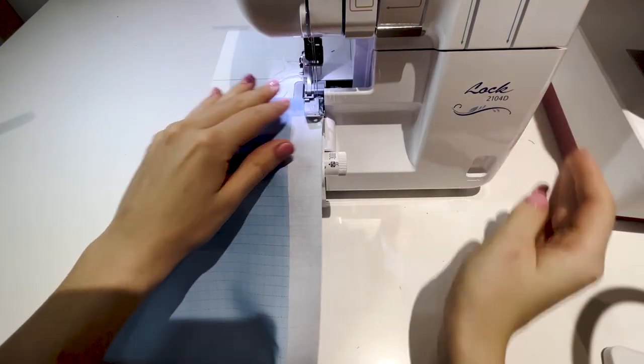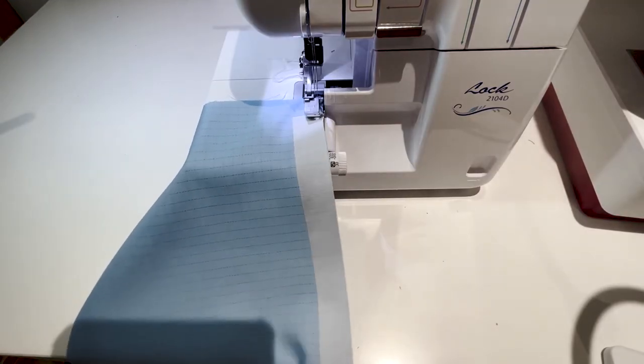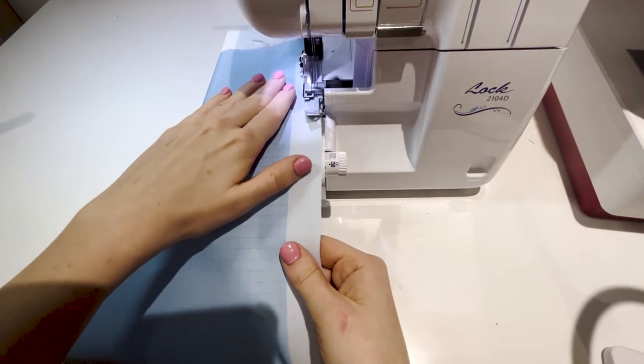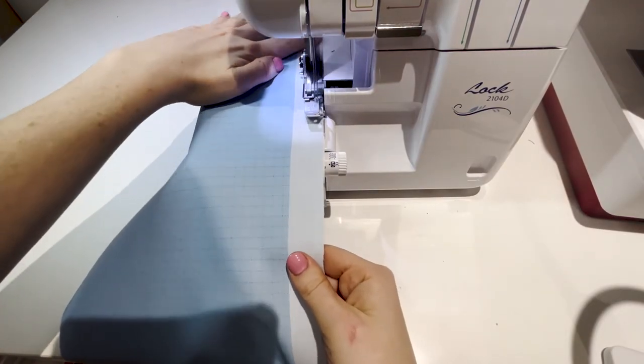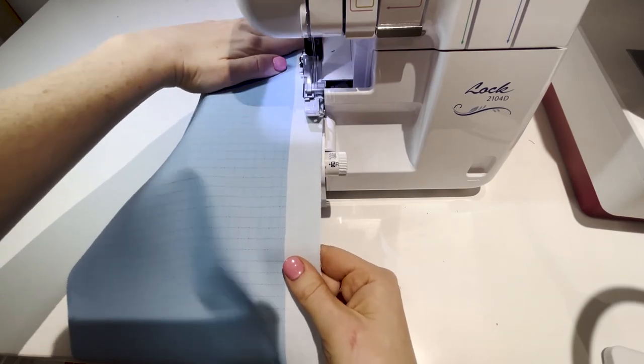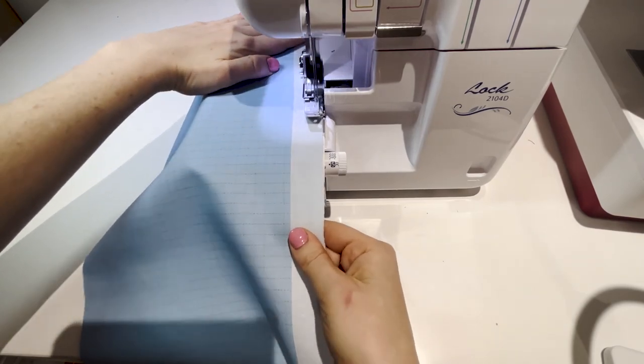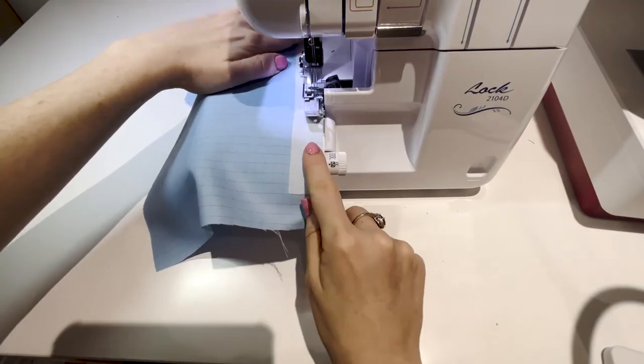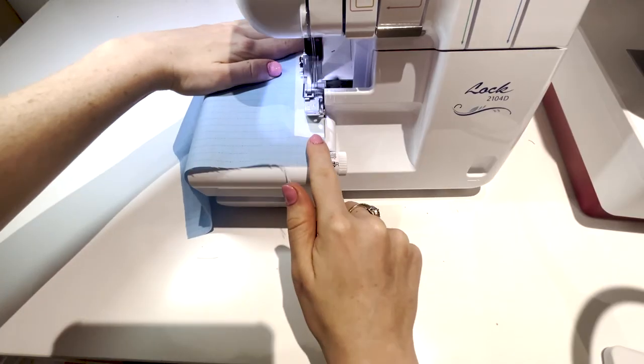I like to begin by overlocking the edges of both pieces - this prevents fraying at the end. Obviously, if you don't have an overlocker you can use a zigzag stitch on your machine. Make sure you're not cutting any of the material off the edge of your fabric and the knife isn't switched on.